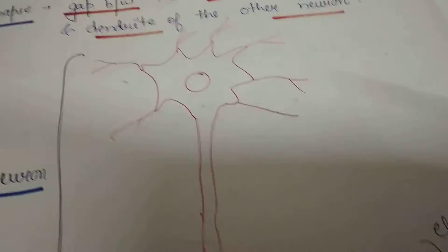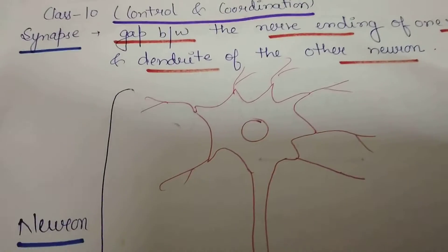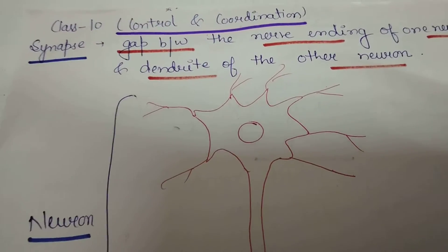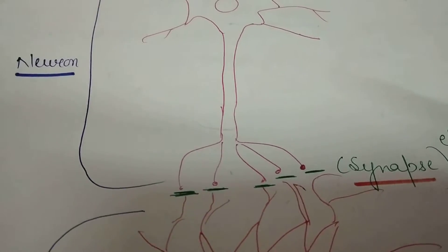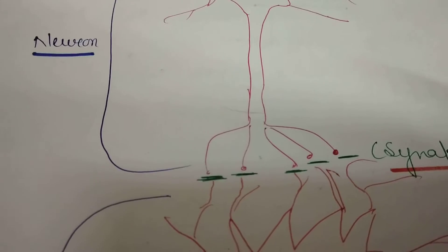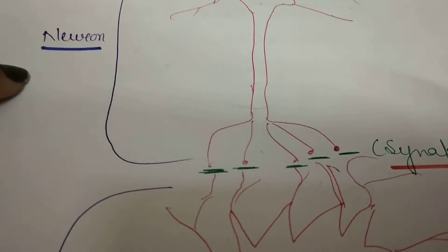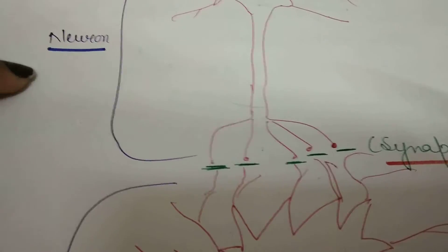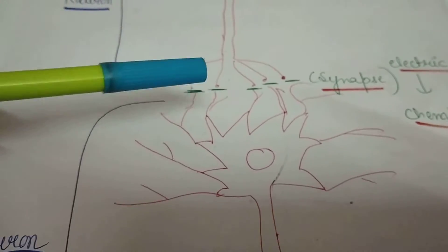Today's topic is synapse. What is synapse? It is the gap between the nerve ending of one neuron and the other neuron. The first neuron's nerve ending connects to the second neuron — this connection is the key concept.